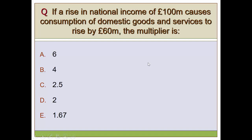Quick question: if a rise in national income of 100 million causes consumption of domestic goods and services to rise by 60 million, what is the multiplier? MPCd = 60/100 = 0.6, so multiplier = 1/(1 − 0.6) = 1/0.4 = 2.5. The answer is 2.5. That's the end of the Keynesian multiplier video.